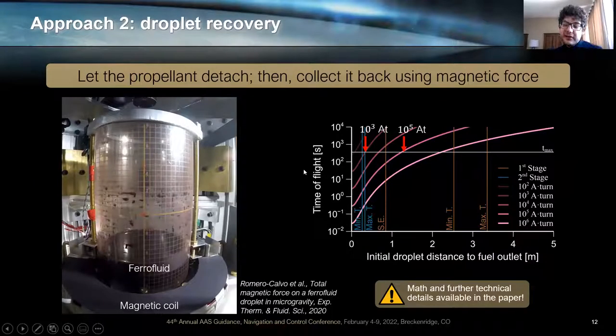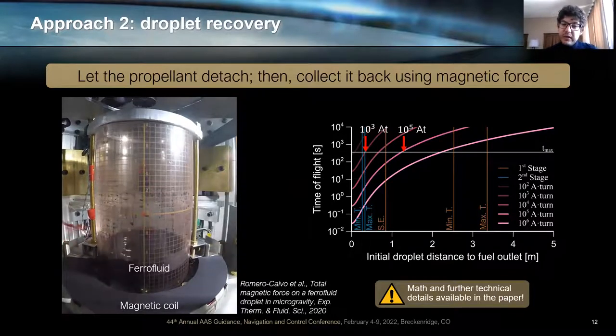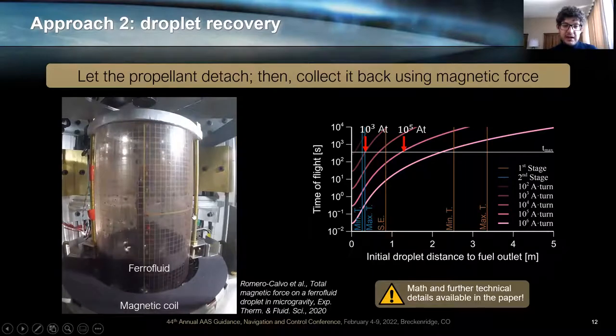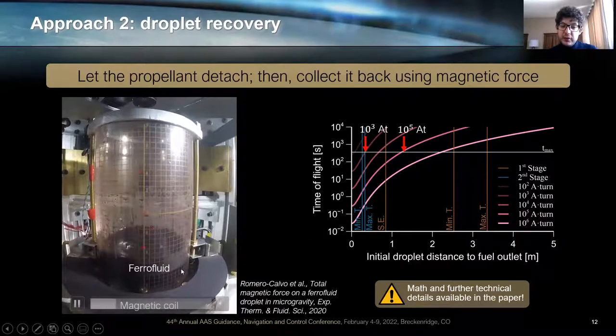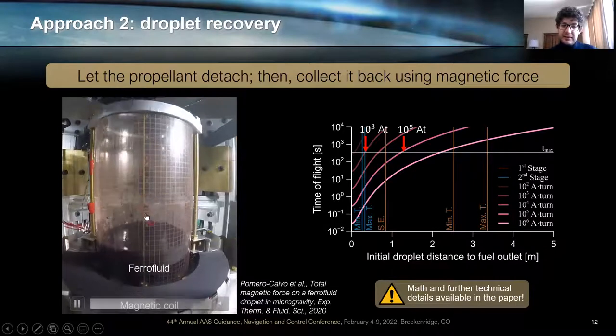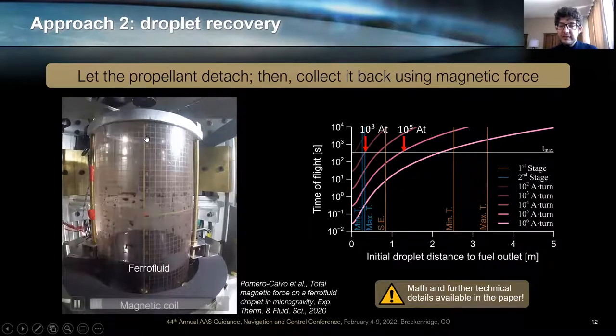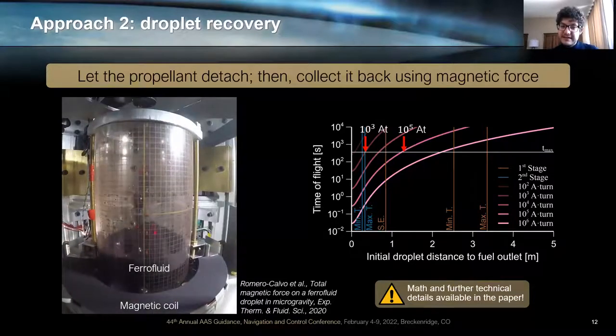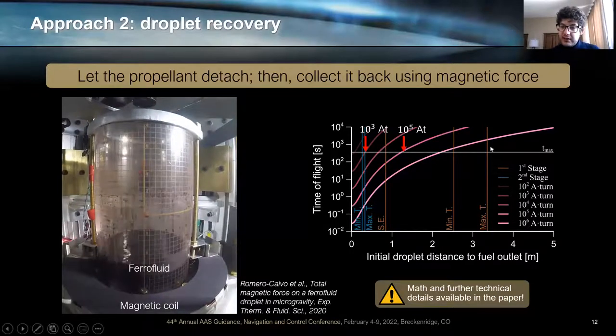The principle follows: if you can't beat them, join them. So the idea is that we will let the propellant fly inside the tank. But then once it is flying up there, we collect it back using a magnetic force. And this is what we tested here in a drop tower experiment at ZARM in Bremen. You can see we have this ferrofluid and magnetic coil. They enter a microgravity window now. And now a droplet is generated. The droplet is magnetic, so it feels attraction towards the magnet. But note how some residual remains at the top of the tank. That is the big problem with this approach. Fluid structure interactions are very strong and the magnetic force cannot beat them at mid distances. So we rely on weak fluid structure interaction to make this work.